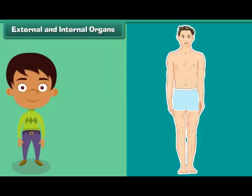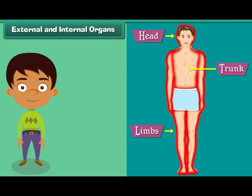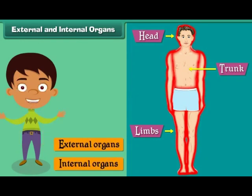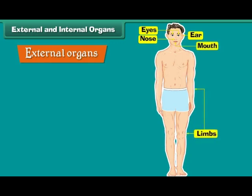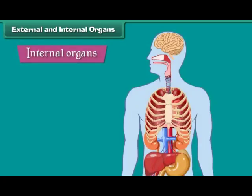External and internal organs: Each of the three main parts of the human body bears many organs. These organs may be classified as external organs and internal organs. The organs that can be seen from outside are called external organs — for example, eyes, ears, nose, mouth, and limbs. The organs that cannot be seen from outside are called internal organs — for example, brain, heart, lungs, stomach, liver, and kidneys.